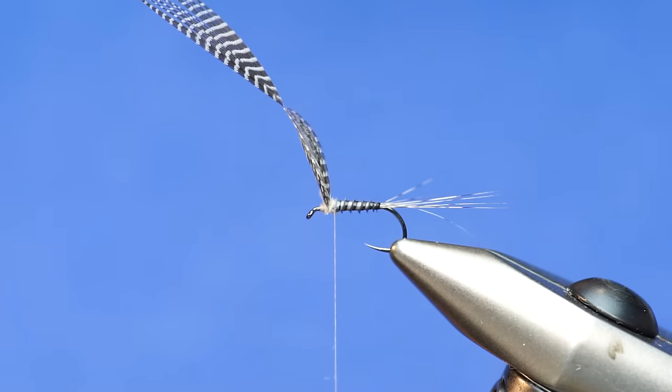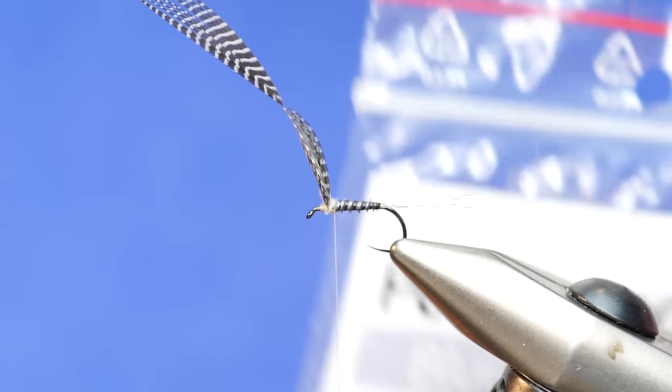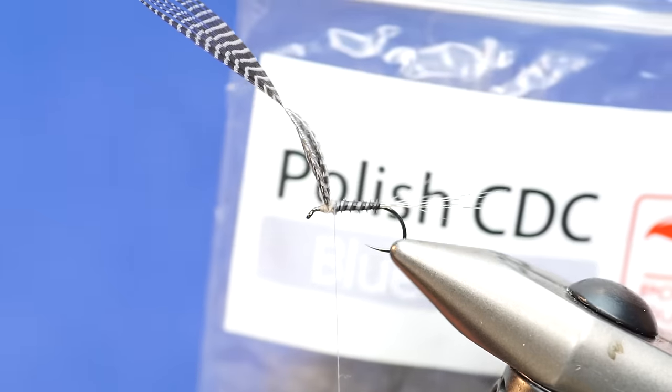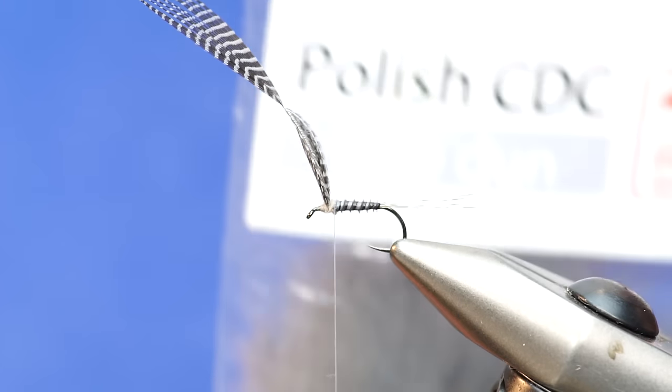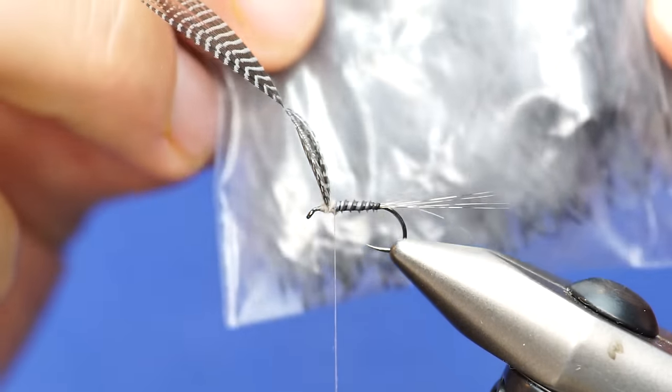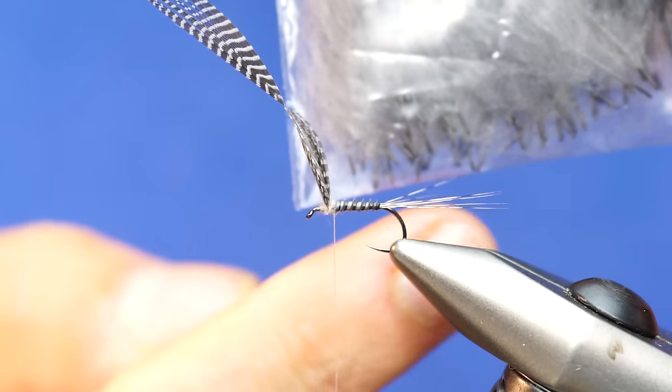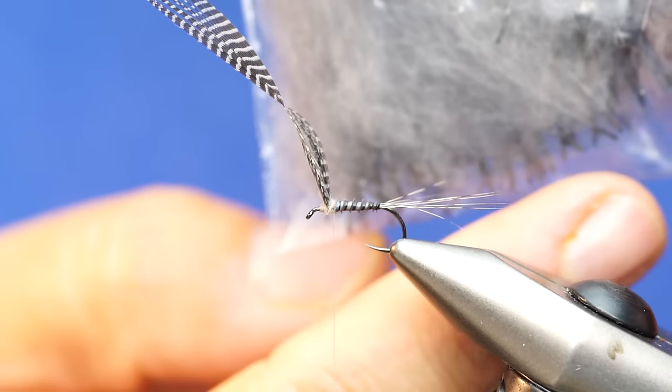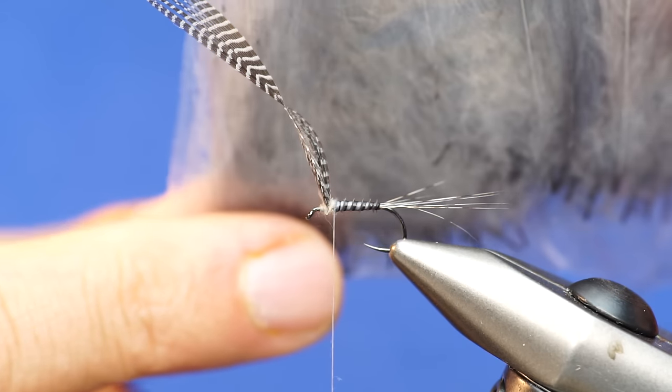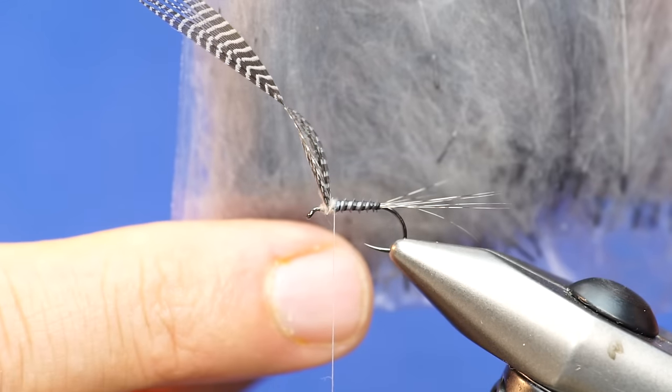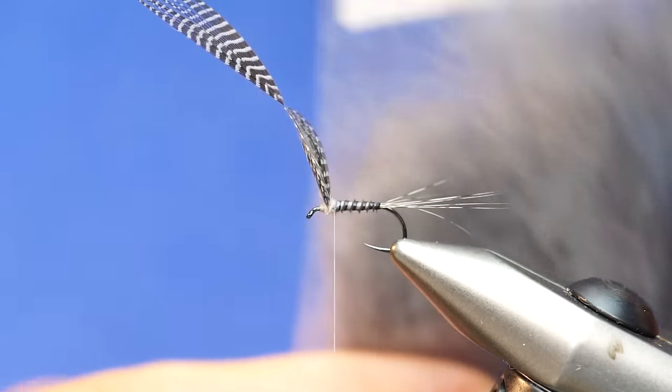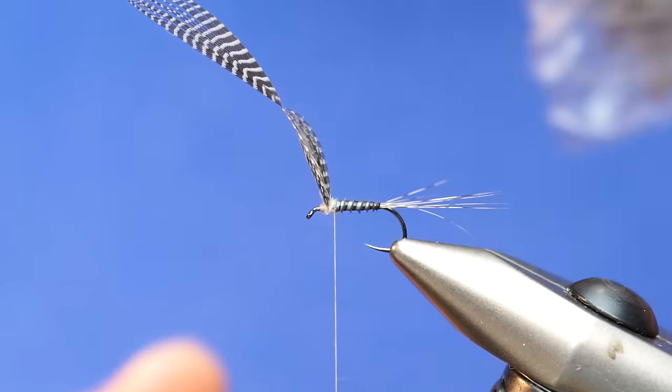This whole pattern here is natural. Going along with that theme, we're going to use some Polish CDC. Now this stuff, you can see how the stems are nice and lined up. These are all uniform in length and for the most part, density. This is good stuff. We sell this on the website.